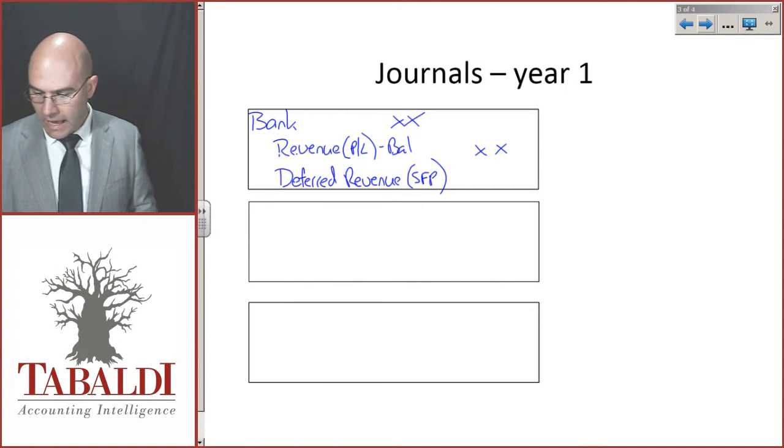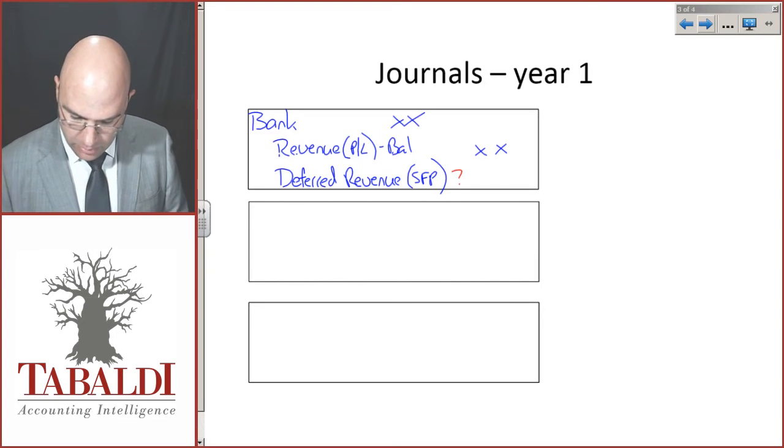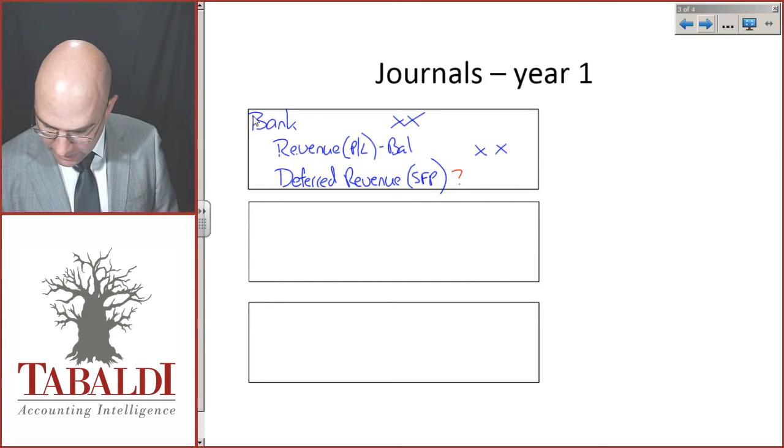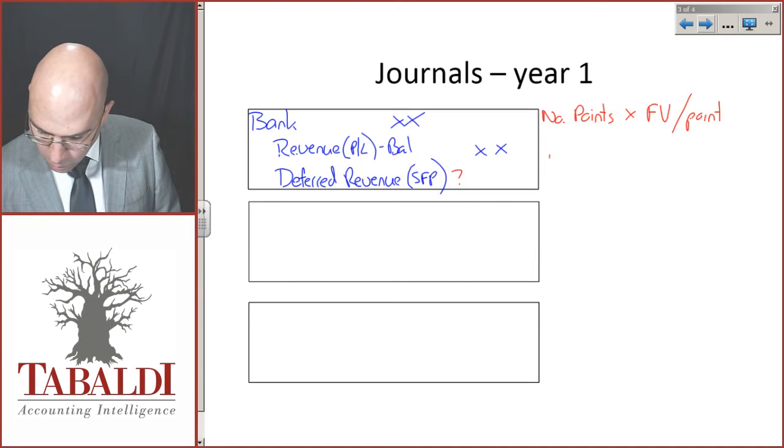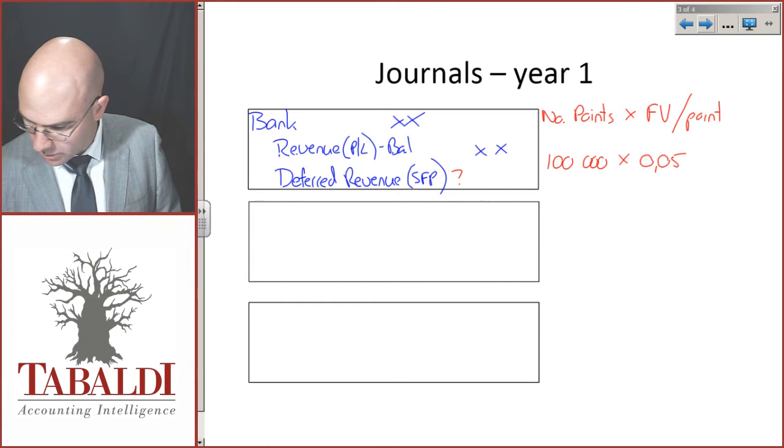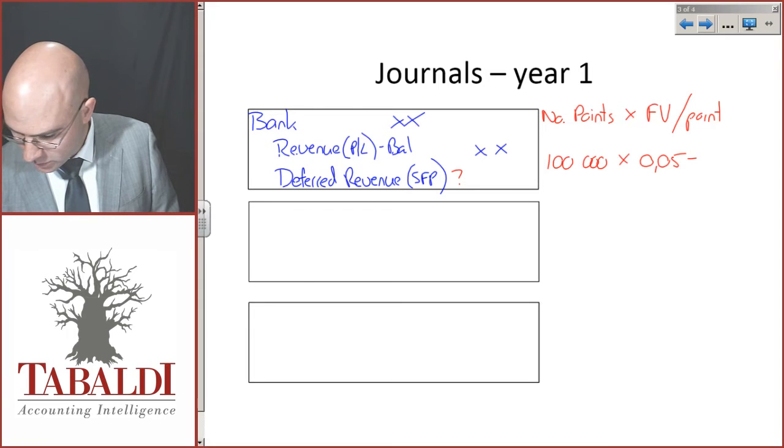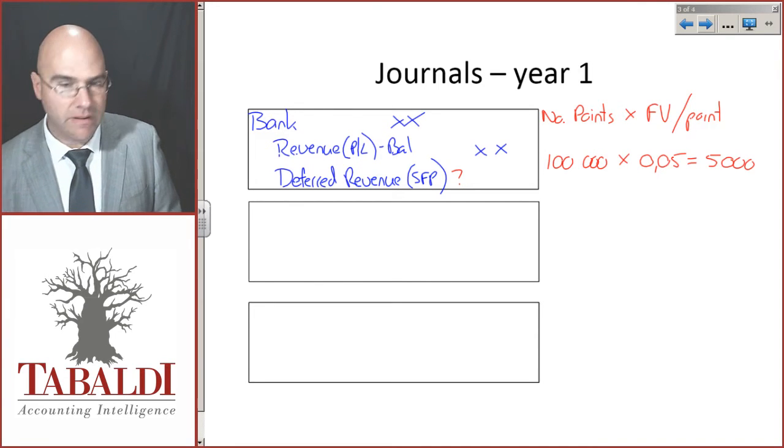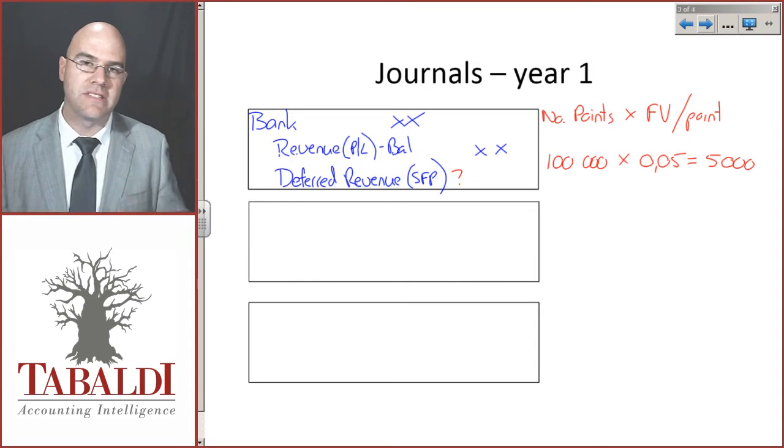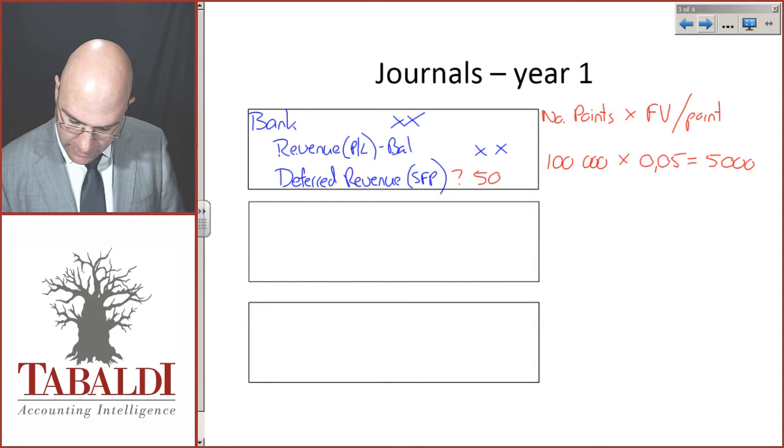Now how did you work out the deferred revenue? The calculation here will be the number of points times the fair value per point. In this example, we had 100,000 points fair valued at 5 cents per point, which equals 5,000. That might be 5,000 Rands, the currency which you're working in.